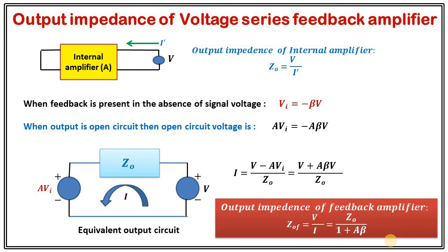By rearranging the terms, the output impedance of the feedback amplifier ZOF equals V/I, since V is the voltage at the output terminal and I is the current flowing in the presence of feedback. This gives ZOF equals ZO divided by (1 plus Aβ). Since 1 plus Aβ is greater than 1, the output impedance in the case of the voltage series feedback amplifier is reduced. So when using voltage series feedback, input impedance increases and output impedance decreases, and the amount of change is decided by the factor β.